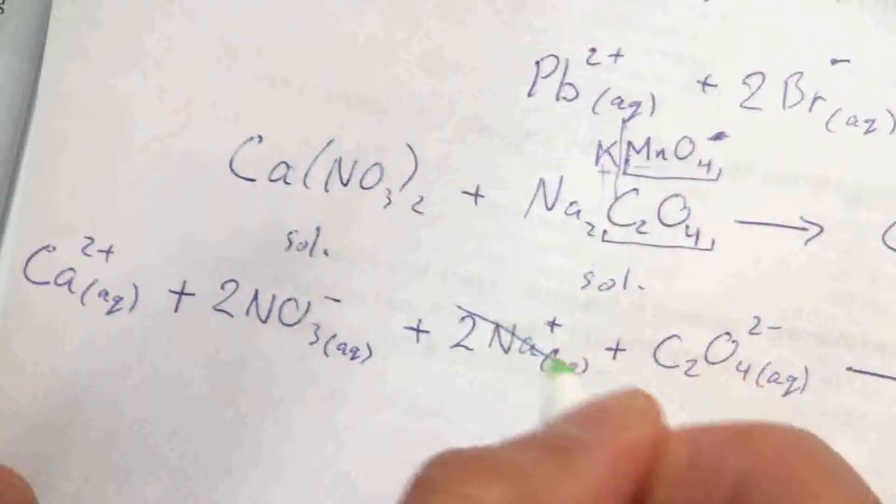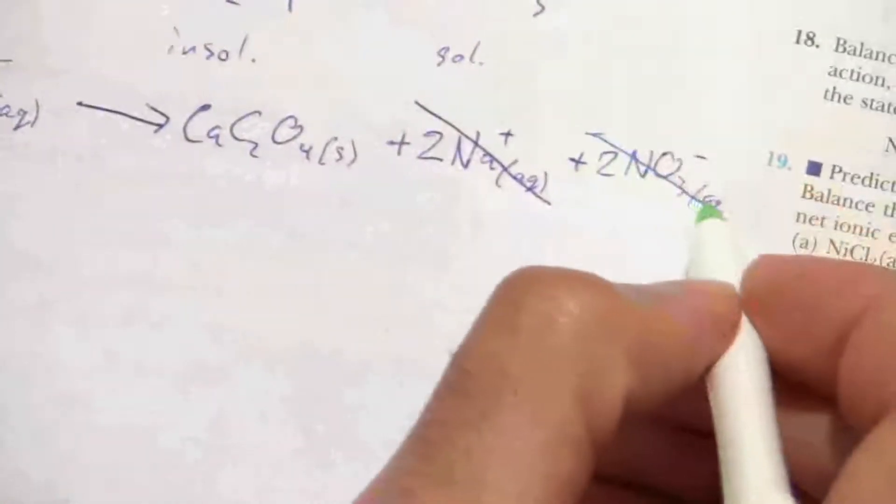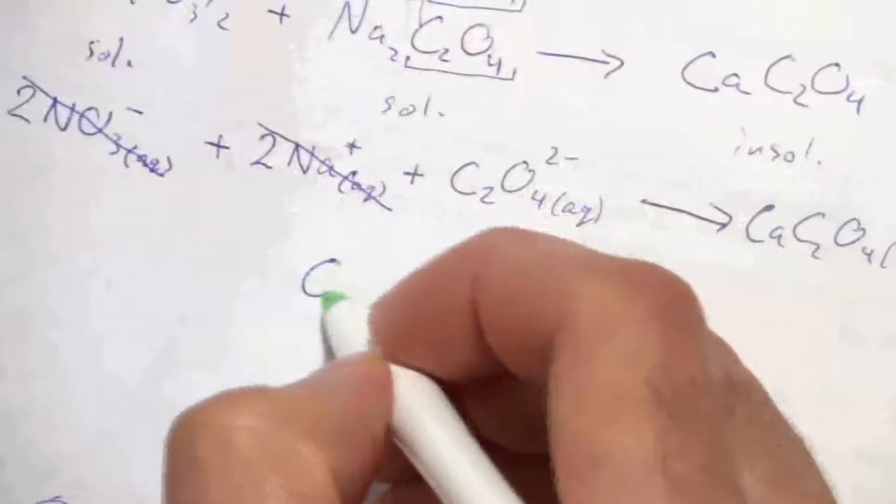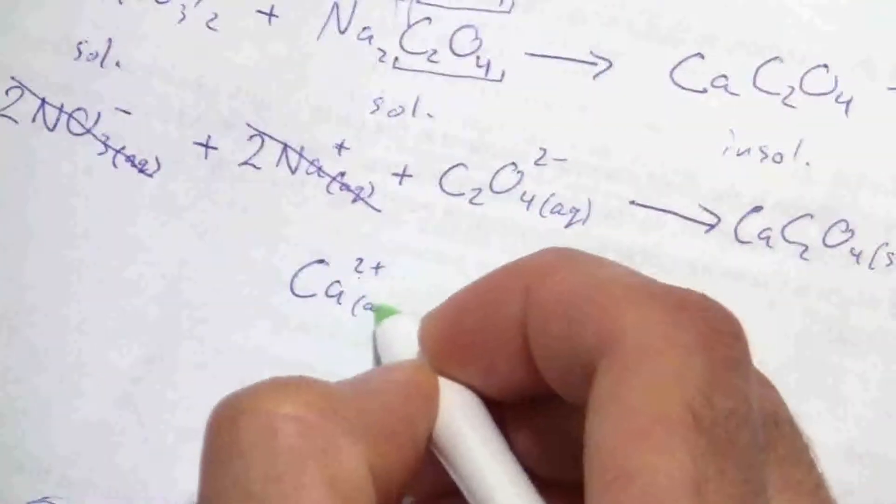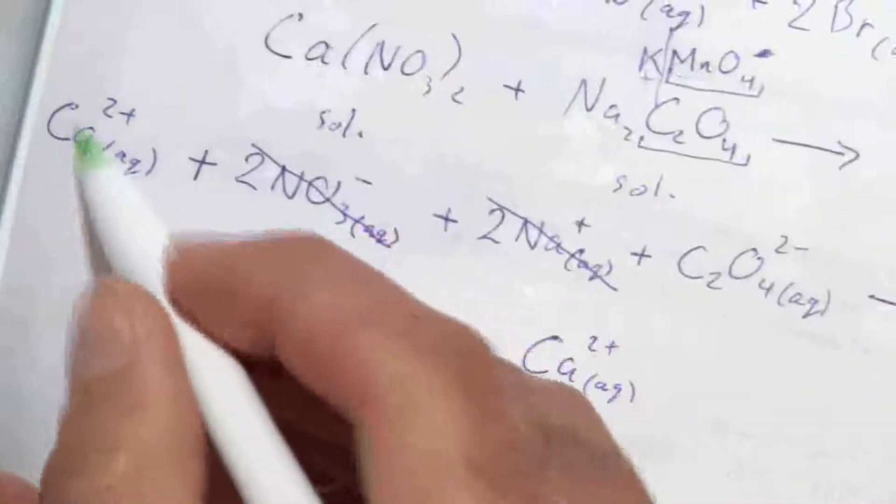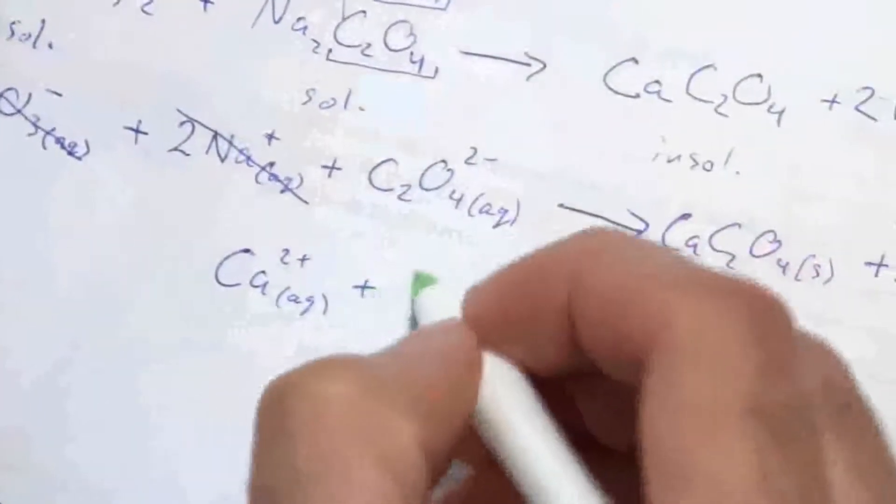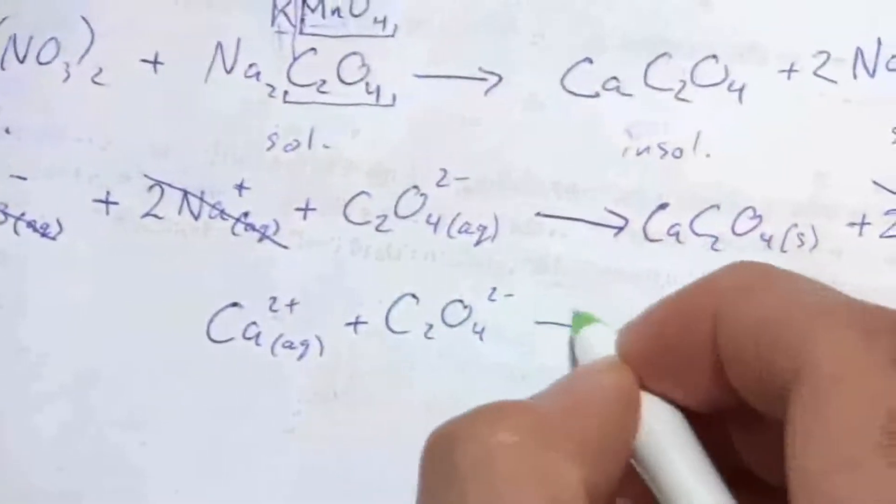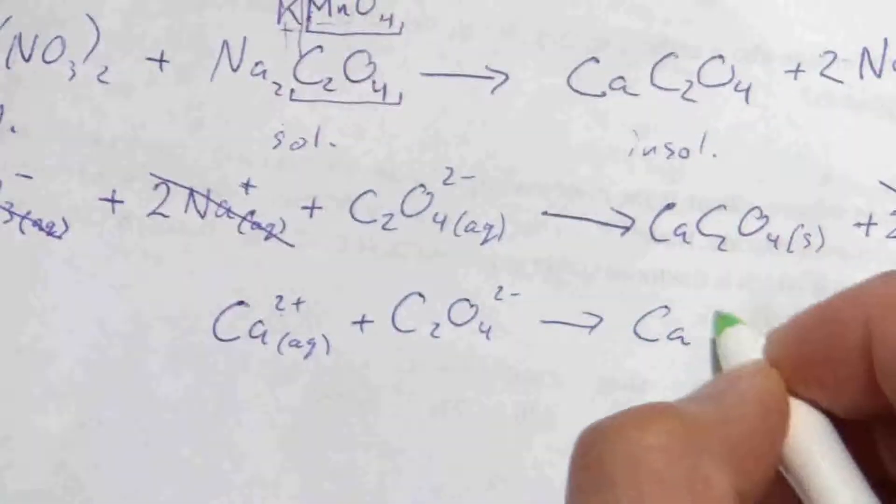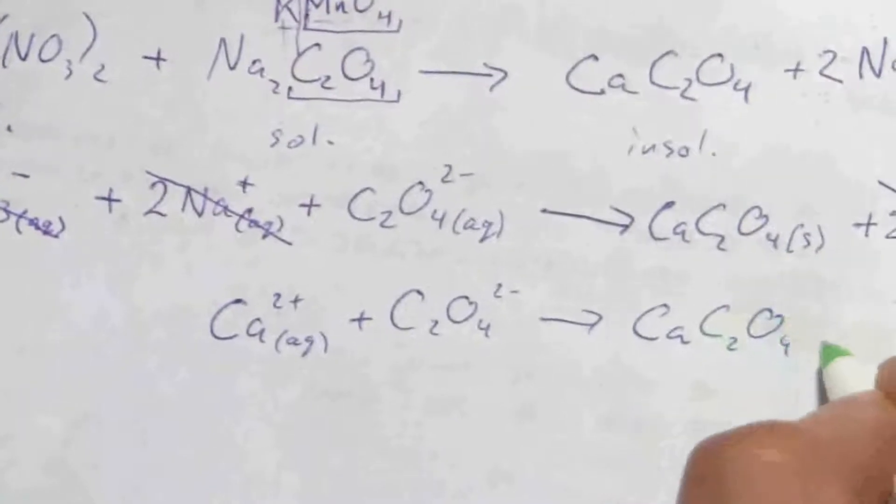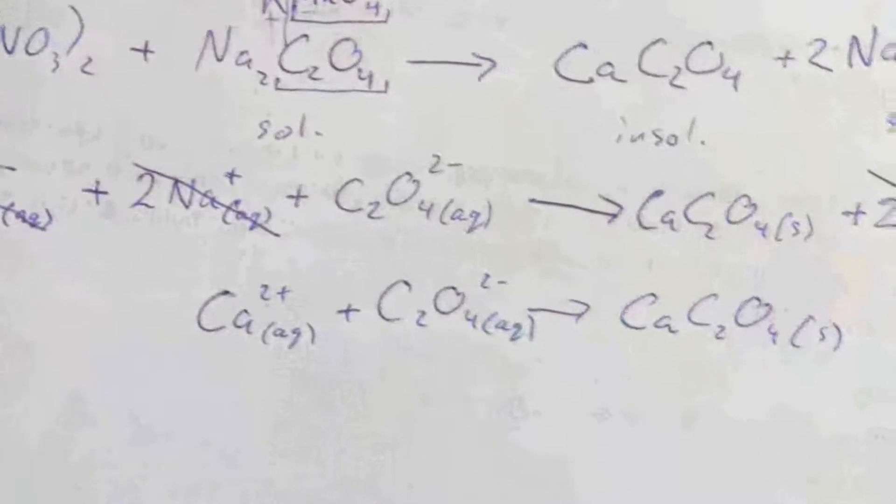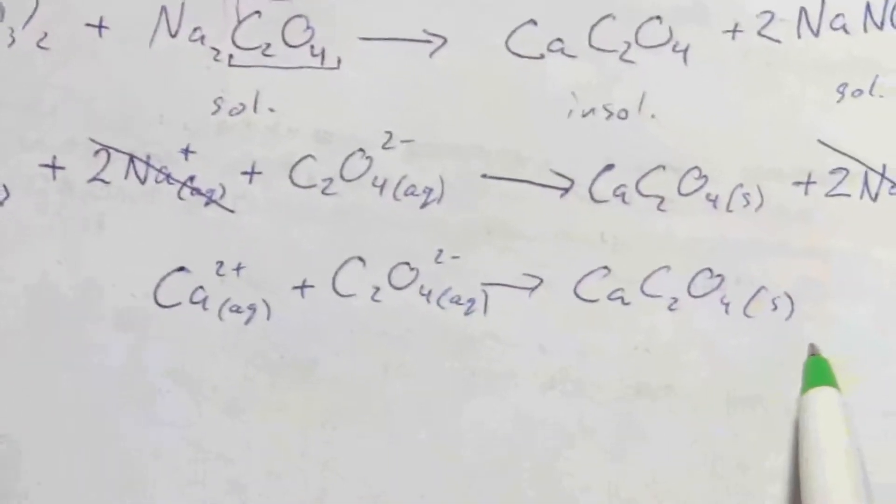Here's my total ionic equation, and I need to cancel out my spectator ions, the two sodium ions as well as the two nitrate ions. And then write my net ionic equation as the calcium ions plus the oxalate ions to give me calcium oxalate solid. I forgot my AQ there. Okay, so there's the net ionic equation.